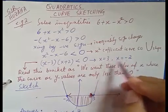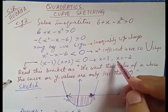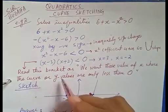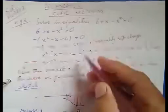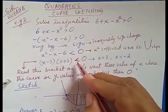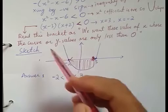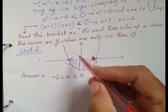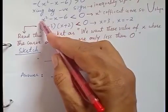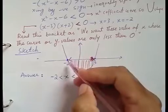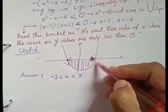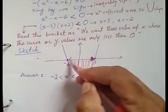Using these values of x, we observe at what point around these roots the curve or y-values are less than zero. There is no equality sign in this inequality. The graph is U-shaped because we made the x-squared coefficient positive. We have minus two on the left and plus three on the right, and the curve passes through these roots.